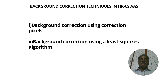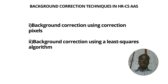Background correction techniques for high-resolution continuum-source atomic absorption spectroscopy can be performed using mathematical methods — specifically, software using information from detected pixels that are not used for measuring atomic absorption, in contrast to line-source atomic absorption spectroscopy.